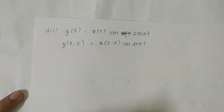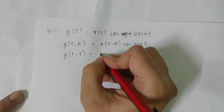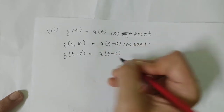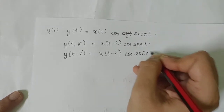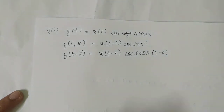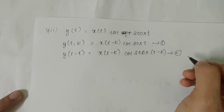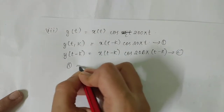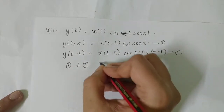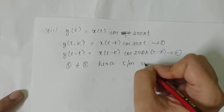And y(t−k) — delaying the output — equals x(t−k)·cos(200π(t−k)). This is the second equation. Since equation one is not equal to equation two, hence the system is time variant.